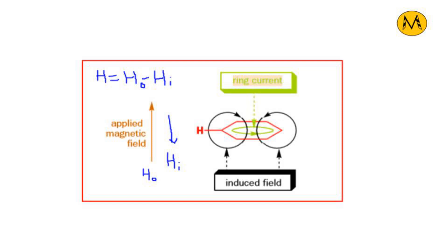The topic we discussed is diamagnetic ring current. This is a simple theory you need to understand. An anti-aromatic molecule will have its magnetic field aligned in the same direction as the external magnetic field, which you should now be able to understand.